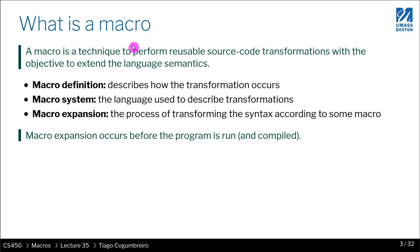Generally when we talk about a macro system or macros, we are actually talking about three different things. One is defining the macro itself, where you have some sort of language that is able to talk about source code and how to transform that source code. There is the macro system, which is the language used to describe these transformations. And finally you have macro expansion, which is essentially the process of applying the macro system on your code.